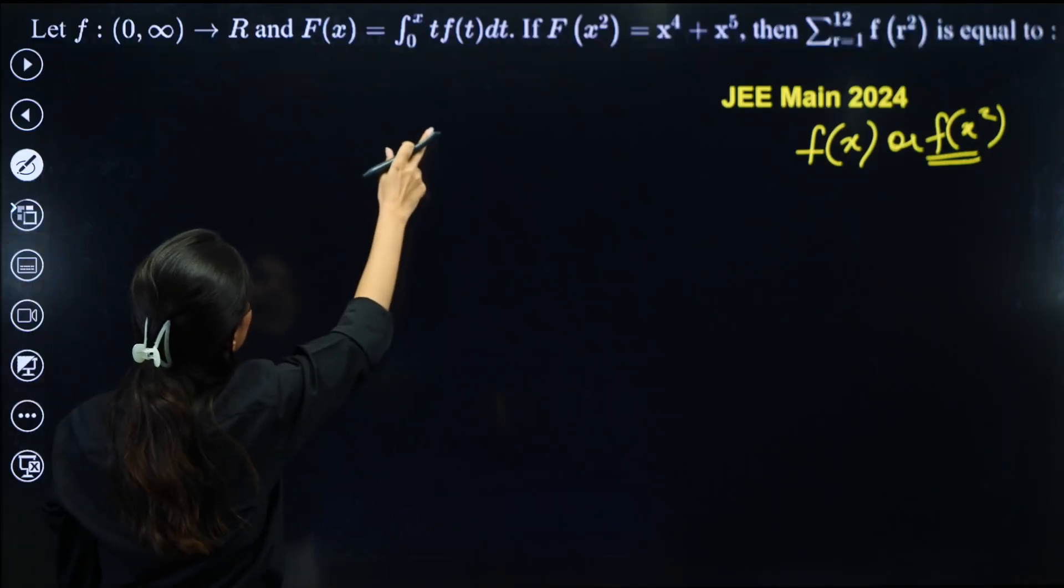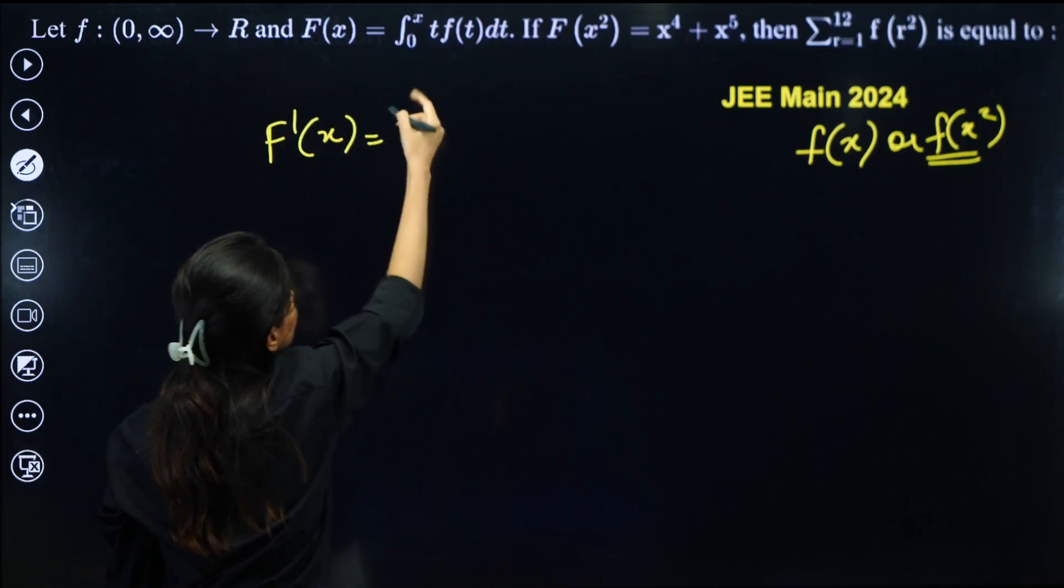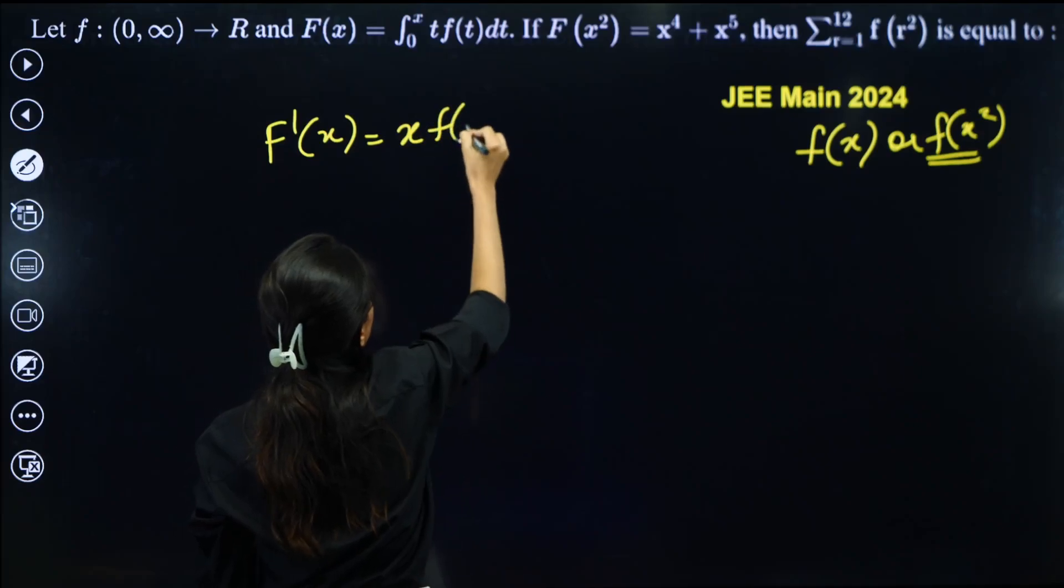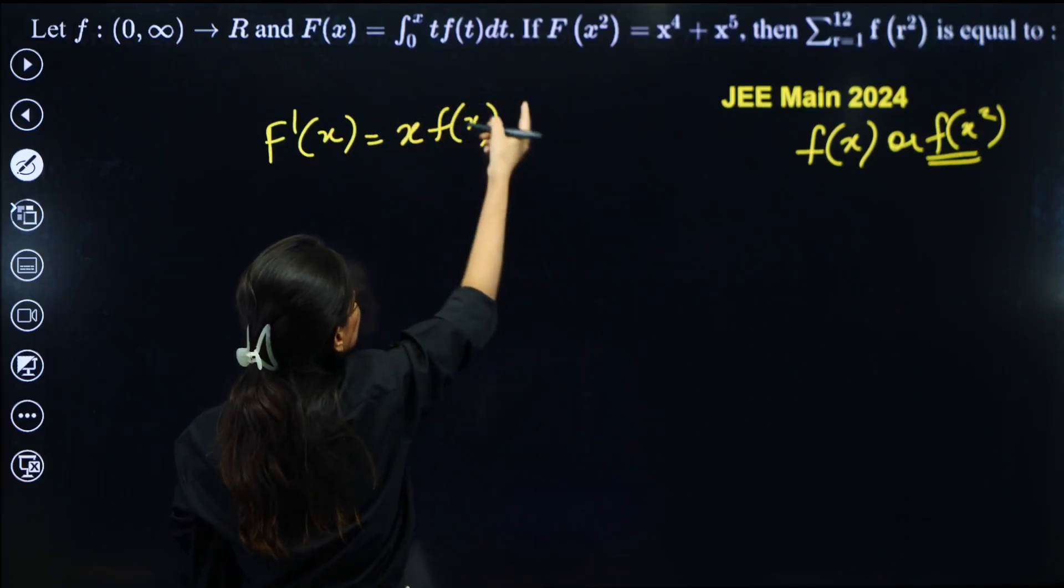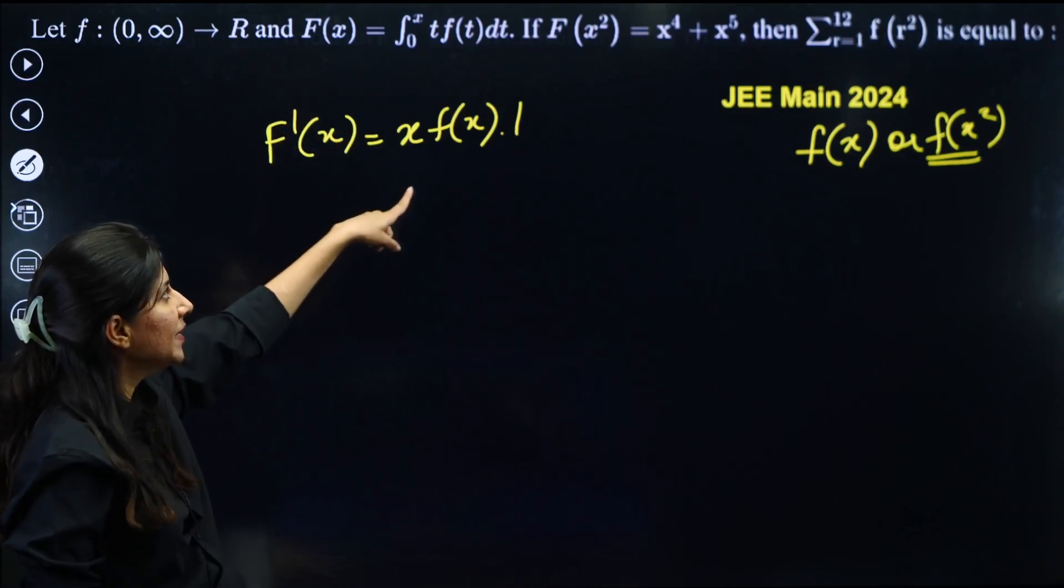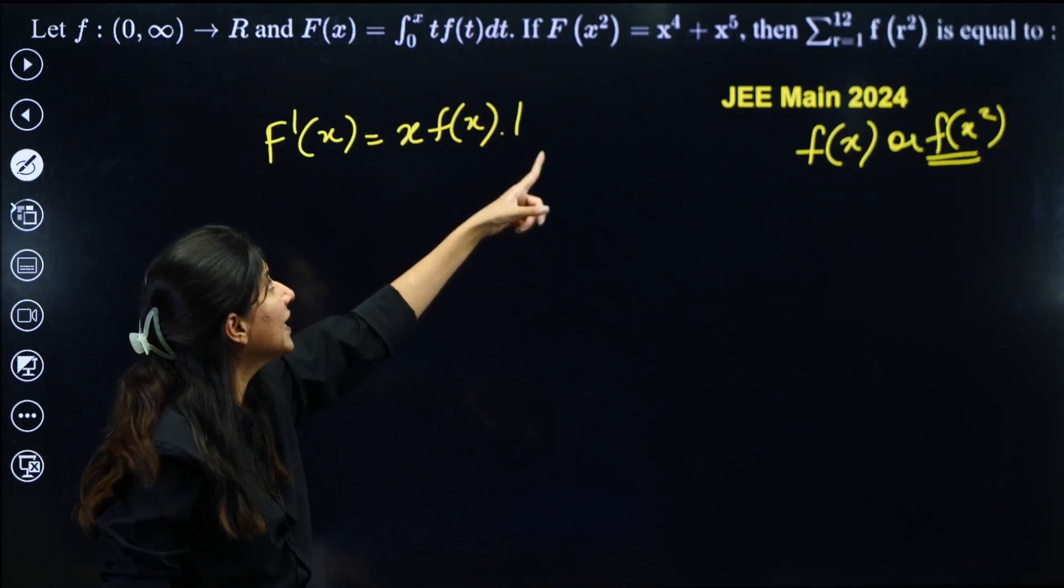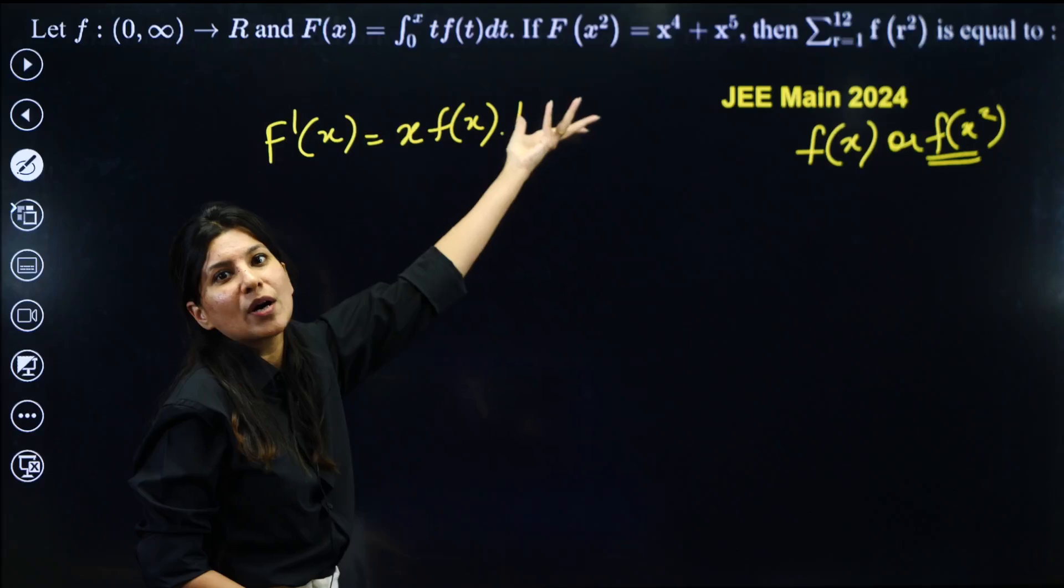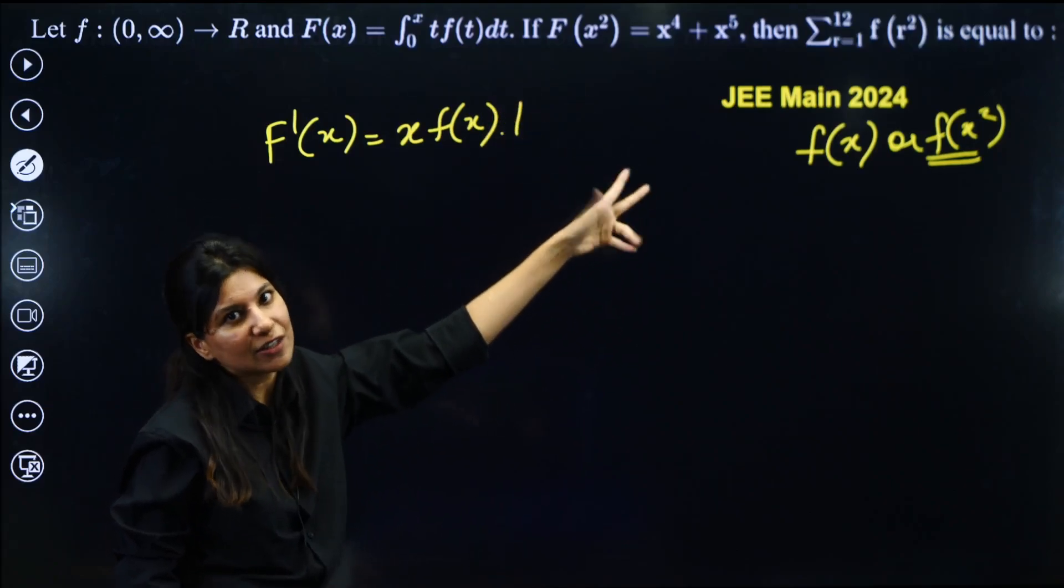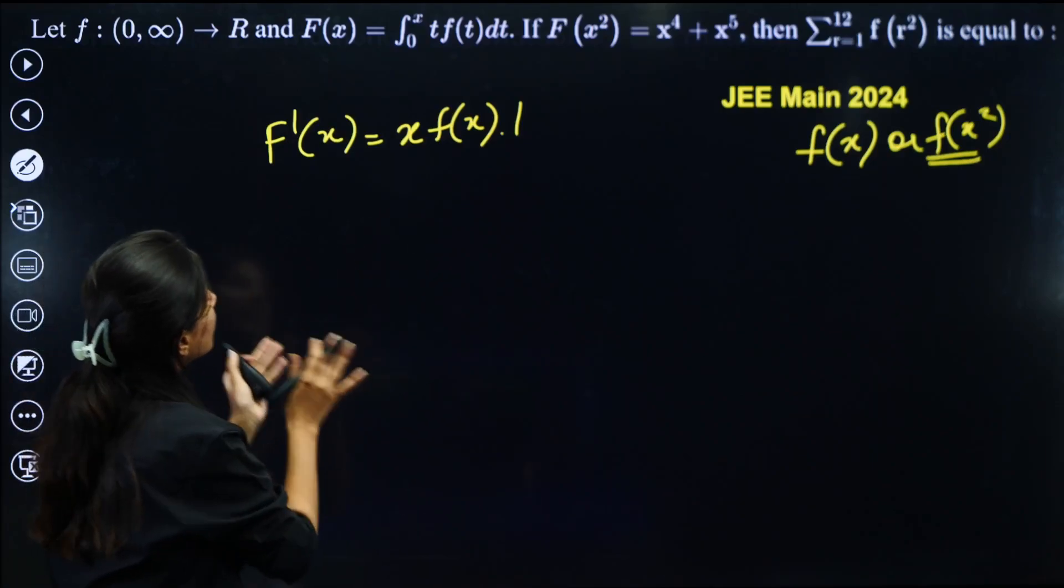Now let's apply Leibniz theorem over here, differentiating both sides. f'(x) is equal to, can you see, x·f(x), derivative of x is 1. So t will be replaced by upper limit. And upper limit will be differentiated. Minus, put lower limit, you are going to get anyway 0, and derivative of 0 is 0. So that's it, we need to stop it over here. So this is f'(x).